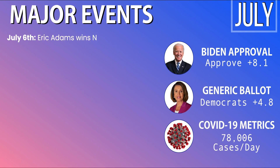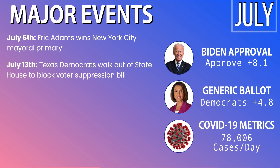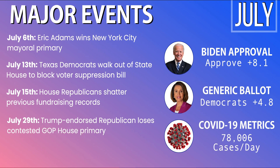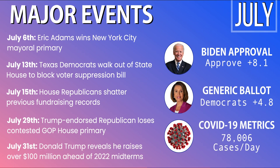In the month of July, on July 6th, Eric Adams won the New York City mayoral primary and went on to win the general election in November. On July 13th, Texas Democrats walked out of the statehouse and left the state to block a voter suppression bill called in the special session. On July 15th, House Republicans shattered their previous fundraising records as 2022 shapes up as a potential red wave year. On July 29th, a Trump-endorsed Republican lost a contested GOP House primary in the Texas 6th District, though the Republican who won ultimately went on to win the seat. On July 31st, Trump revealed he raised over $100 million ahead of the 2022 midterms. Biden dips to plus 8.1%, Democrats lead the generic ballot by 4.8%, and COVID cases surge to 78,006 per day.